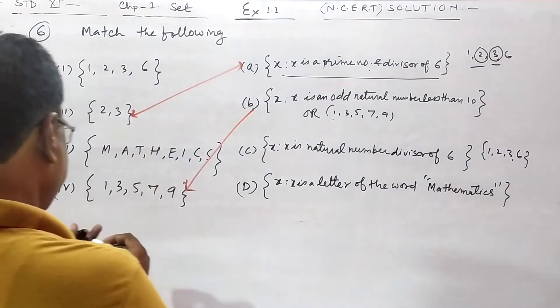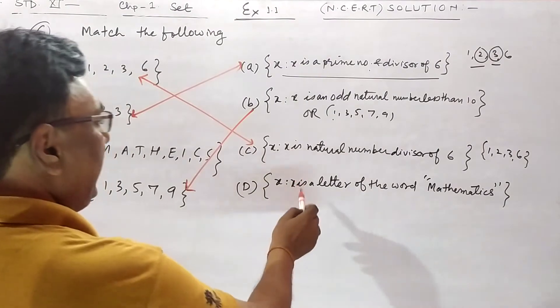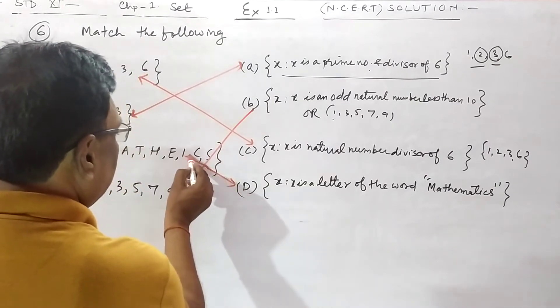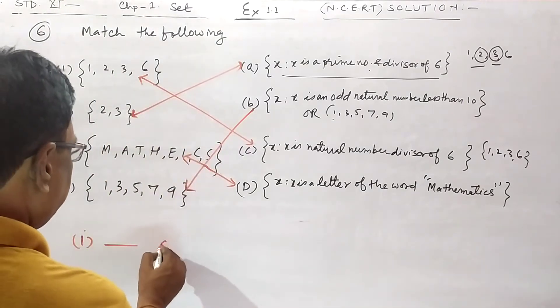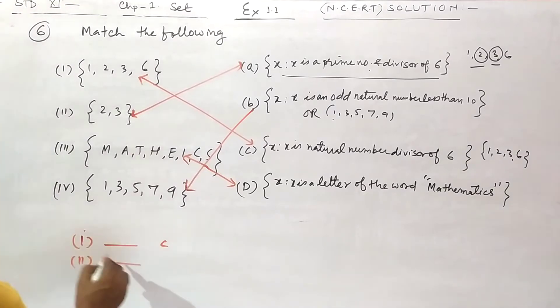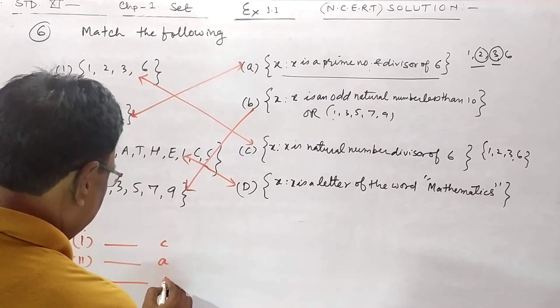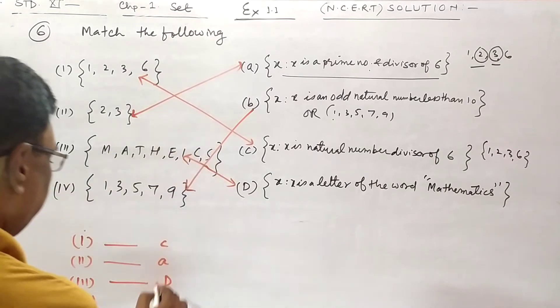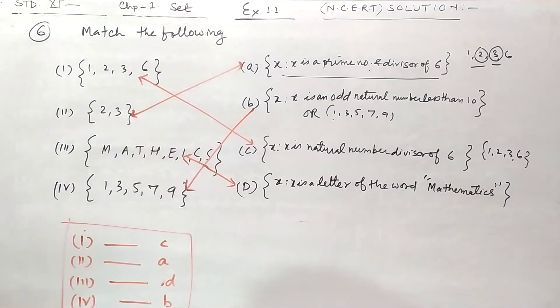And x is a letter of the word mathematics. So this is the final answer: first C, second one A, third D, and then fourth B. This is the final answer. So I hope you all are getting it. Thank you.